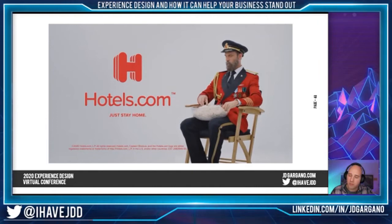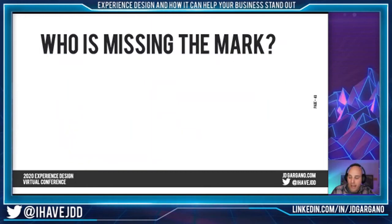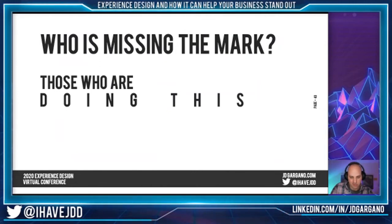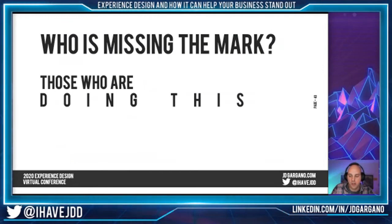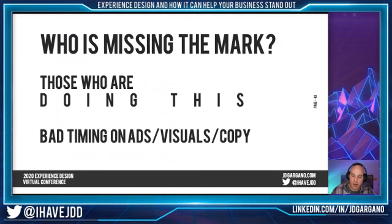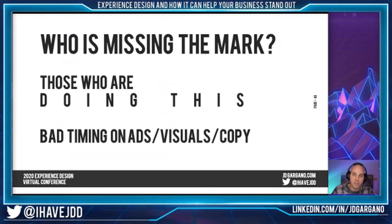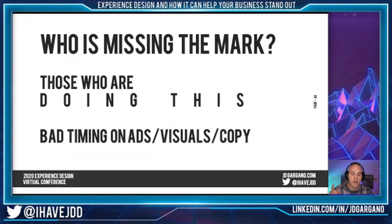I know you guys have seen companies and brands that are taking advantage of the situation or not quite hitting the mark. I think we can all agree about people who are taking their names and stretching them out for the sake of social distancing — we get it. But I think it's very self-serving. Bad timing on ads or visuals or copy — there were a lot of companies that were scrambling to pull ads off the air with people hugging and shaking hands and licking fingers after eating food. It's unfortunate, but it happens. It's time to look at what you're saying in these times and change those messages to think about the way people are going to feel. Emotion is what's driving the experience for these people.